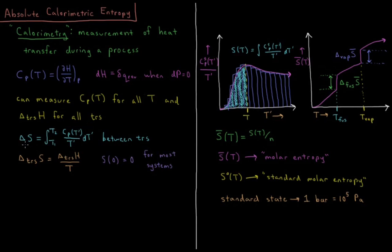Between phase transitions we use this integral of Cp over T. At the transitions, the entropy change of a phase transition is equal to the enthalpy change of that phase transition, the heat that we absorb during that phase transition, divided by the temperature.